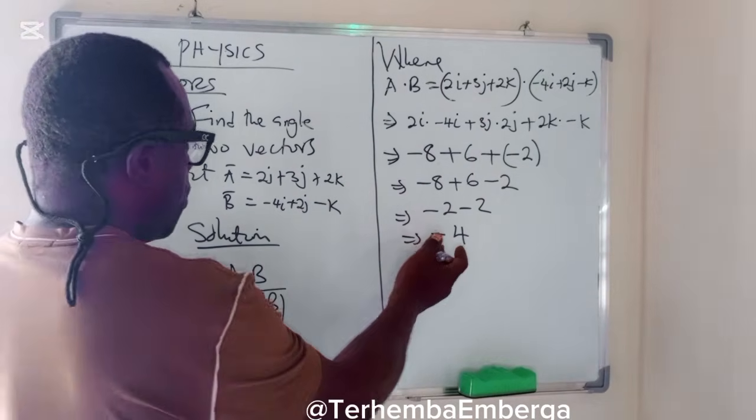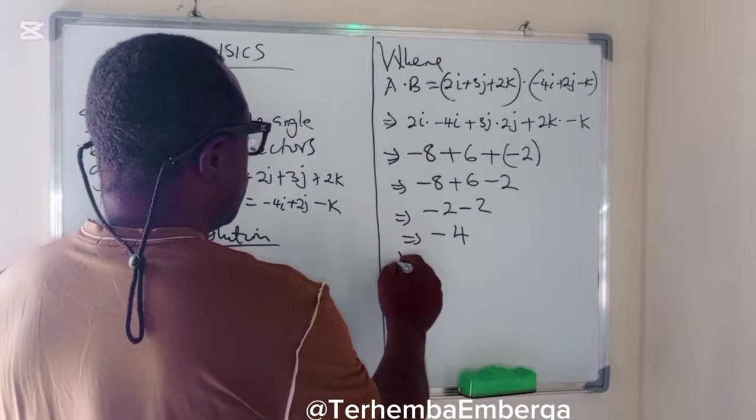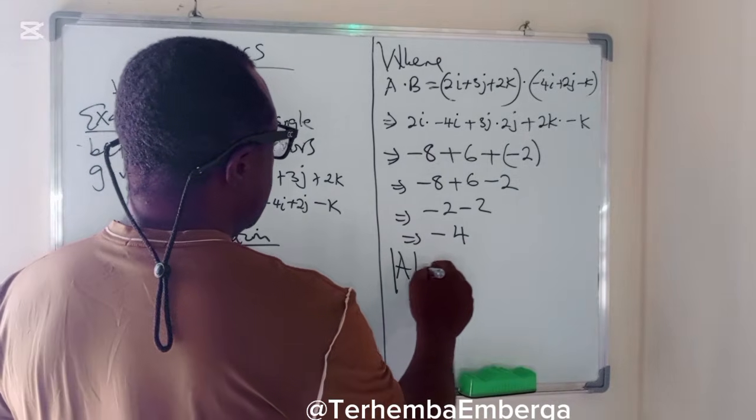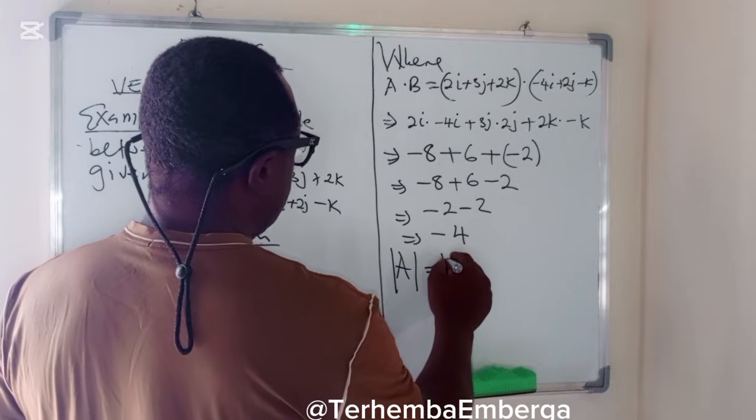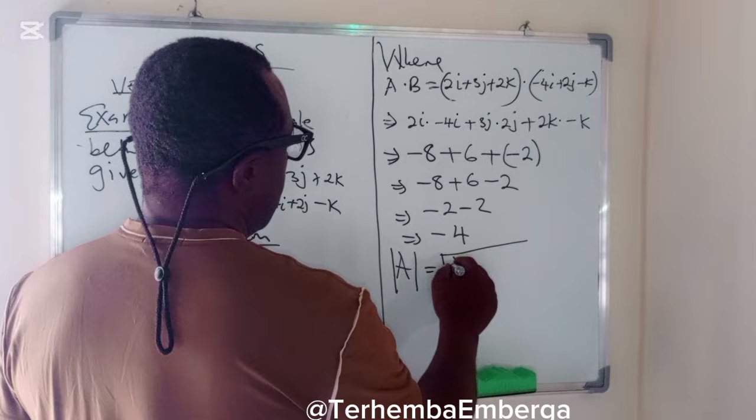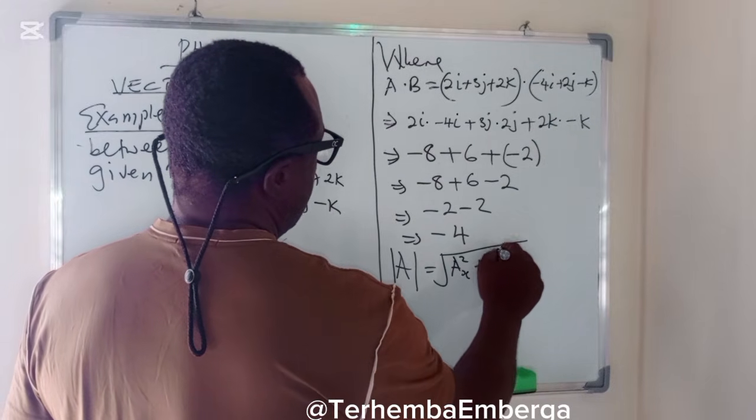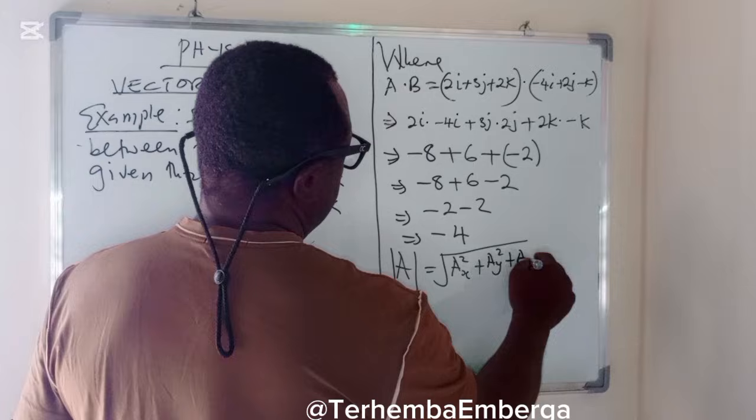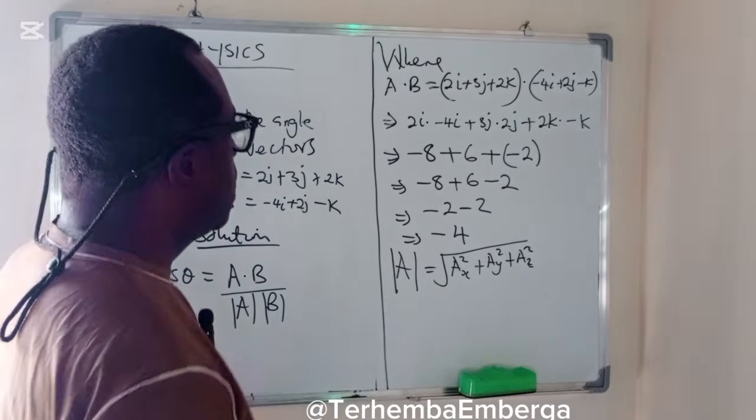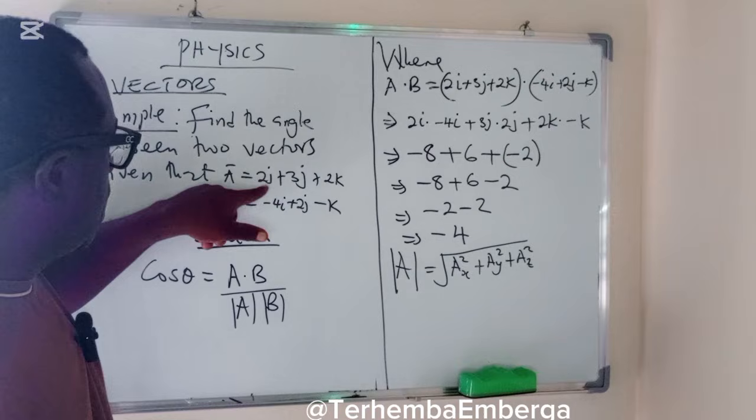We have known what is A dot B. So modulus of A is the same thing as square root of A_x squared plus A_y squared plus A_z squared. So in this case, what is A_y?